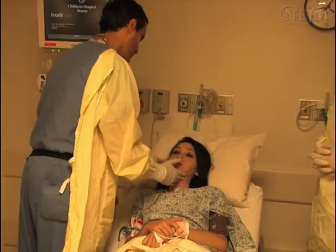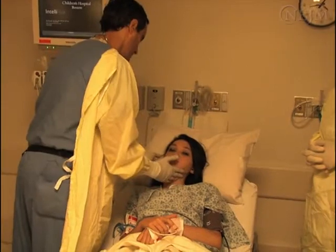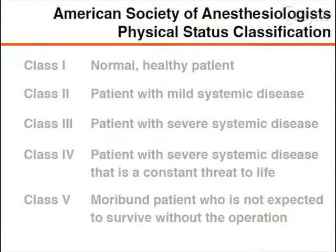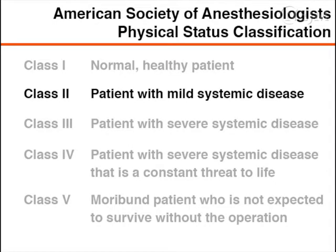Risk assessment should include a general assessment of underlying health, such as the five-point physical status classification system of the American Society of Anesthesiologists. Procedural sedation is often performed only in patients categorized as class one — a normal healthy patient — or class two — a patient with mild systemic disease — except in urgent or special situations.